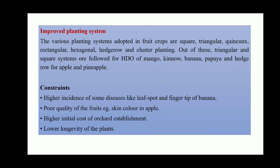However, there are certain constraints for the adoption of this technology. The higher incidence of some diseases like leaf spot and Sigatoka of banana is found in HDP because of the dense plantation, making it very difficult to control such diseases. Poor quality of fruits — for example, skin color in apple — because sunlight interception is not possible up to the end leaf, so the lack of sunlight in certain portions of the plant leads to poor fruit color quality.